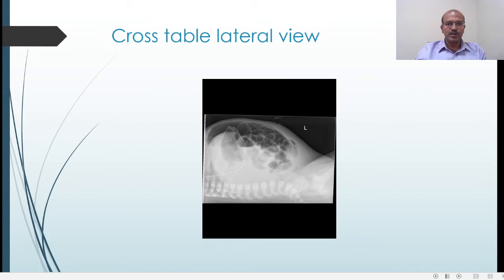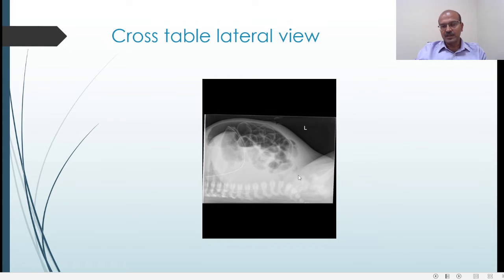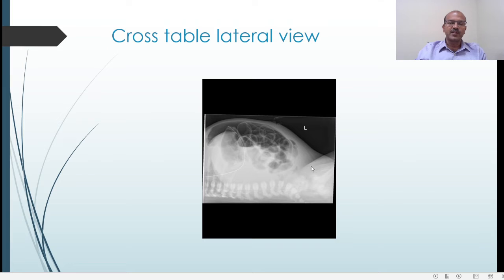This is a cross-table lateral view, and as mentioned in the video on lying positions, you can use it to see whether a line is going into the IVC or going posteriorly into the lumbar plexus. So if there is any kinking, curling, or if it is to the left of the spine, you should do this cross-table lateral.